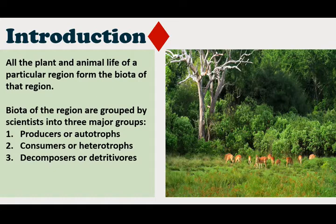Biotic factors such as soil bacteria, plants, top predators and pollinators can all profoundly shape which organisms can live in an ecosystem and what survival strategies they use. Biotic factors together with non-living abiotic factors such as temperature, sunlight, geography and chemistry determine what an ecosystem looks like and what ecological niches are available.